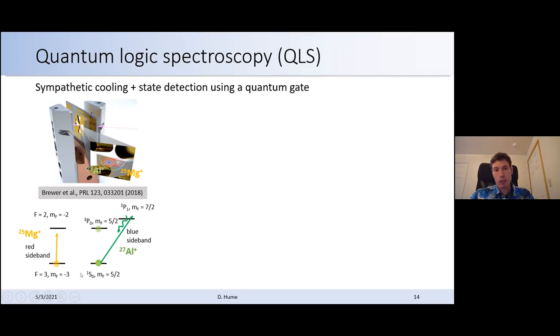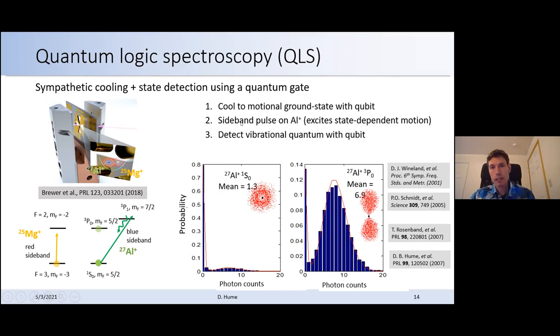This relies on cooling to the ground state and a couple of sideband pulses. So I'll describe that process real briefly. The first step is going to the motional ground state using the qubit. And you can apply a sideband pulse here on the aluminum ion system, which excites one quantum of motion dependent on the clock state of aluminum. So you're trying to distinguish whether the ion is in the ground state or the excited state. You do a sideband pulse on this auxiliary transition, which inserts a quantum of motion only if the ion is in the singlet S0 state. You transfer that motion to the qubit by doing another sideband pulse on the qubit state. And there you've transferred the initial superposition of the clock state on aluminum to the qubit. And then you can detect it using fluorescence measurements. So this is an example from the aluminum system where we get a certain number of photon counts when it's in the ground state, and then a larger number of photon counts when the aluminum ion is in the excited state.